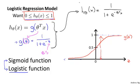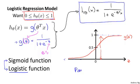Finally, given this hypothesis representation, what we need to do, as before, is fit the parameters theta to our data. So given a training set, we need to pick a value for the parameters theta, and this hypothesis will then let us make predictions. We'll talk about a learning algorithm later for fitting the parameters theta. But first, let's talk about the interpretation of this model.